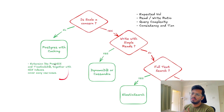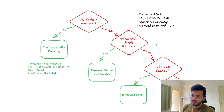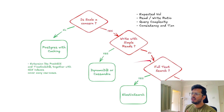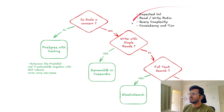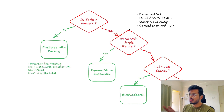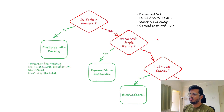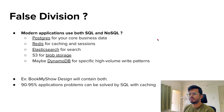If scale is the primary concern, evaluate the pattern: if write-heavy, go with DynamoDB or Cassandra. If read-heavy with full-text search needs, consider Elasticsearch. For simple lookups or caching, go with Redis. You should have all requirements — expected volume, read/write ratio, query complexity, consistency, and transaction needs — before deciding. This is your go-to chart for an interview.